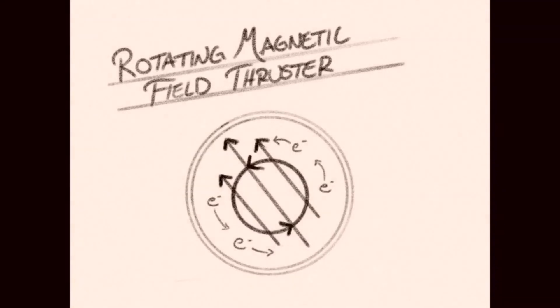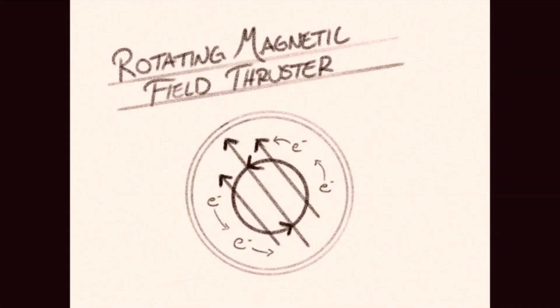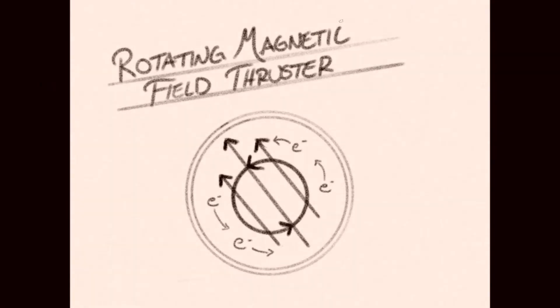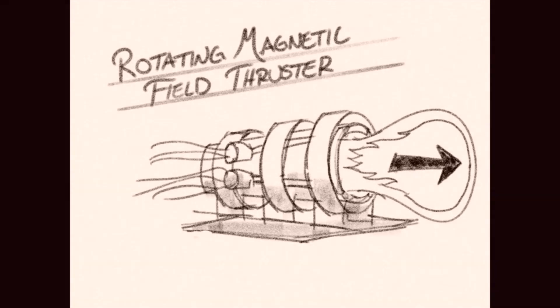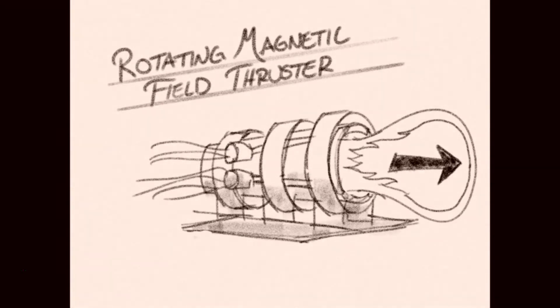In this case, it is the electrons in the plasma that go for a ride on the rotating magnetic field. Doesn't that look fun? The spinning electron current pushes off a static magnetic field formed by a set of electromagnets to great effect.